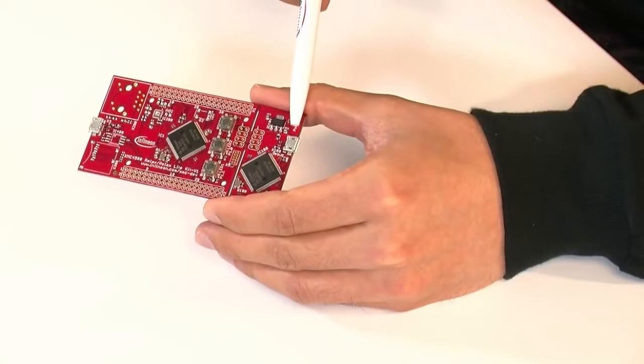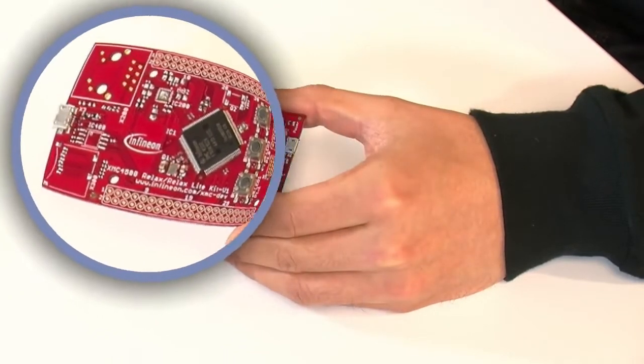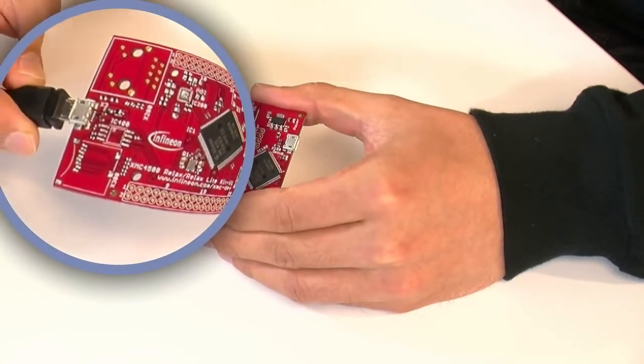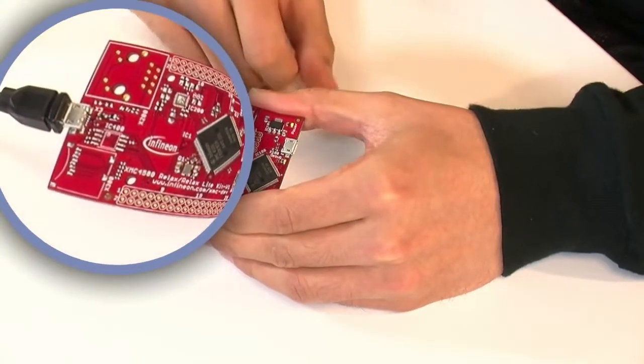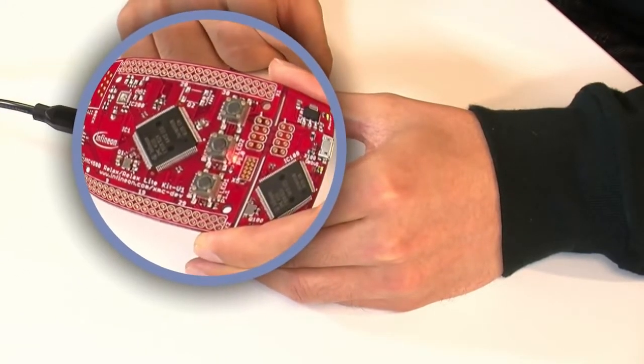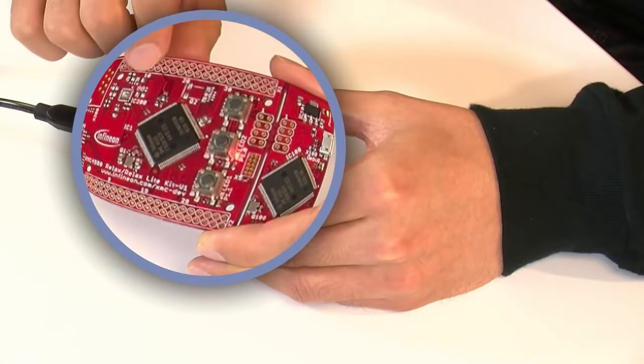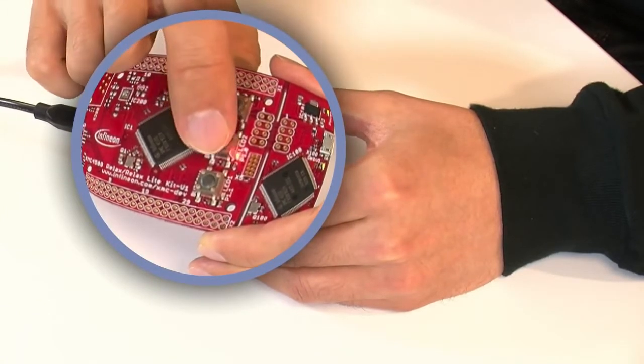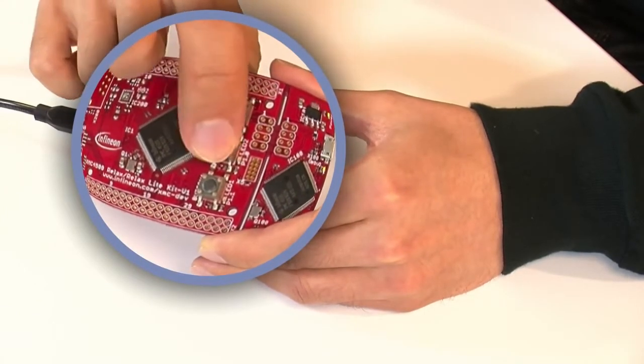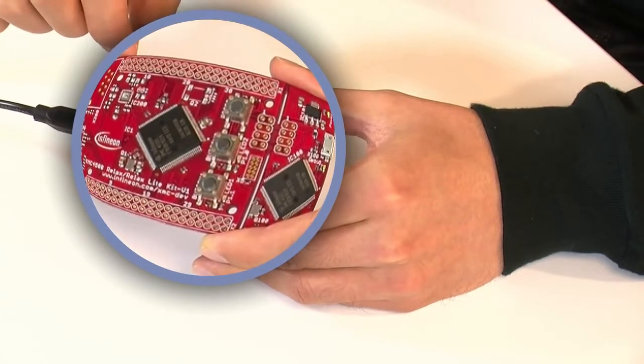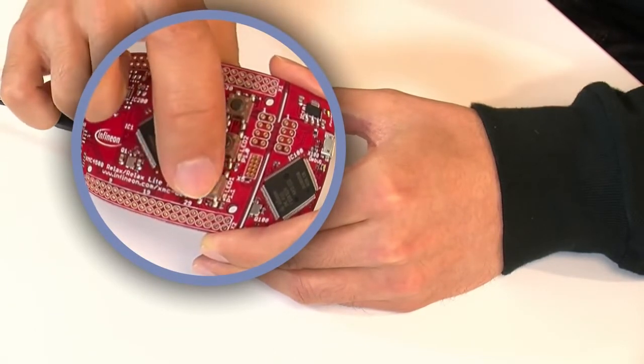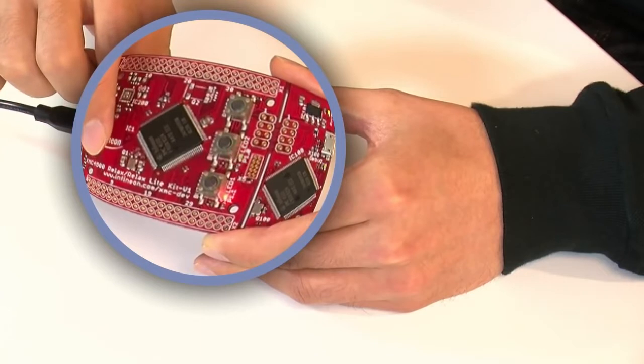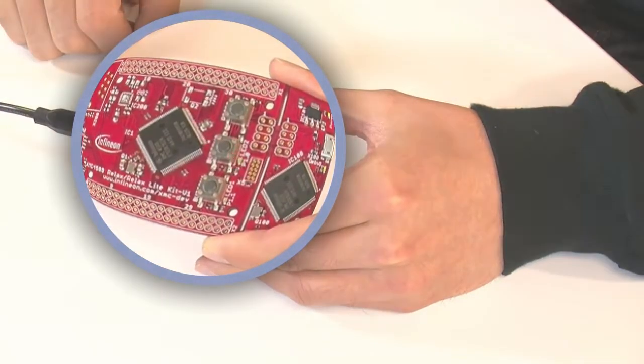You can power the board with this USB plug or with this one. The initial program runs a blinking LED 2 where you can switch off and on with button 2 and switch on LED 1 on and off with button 1.